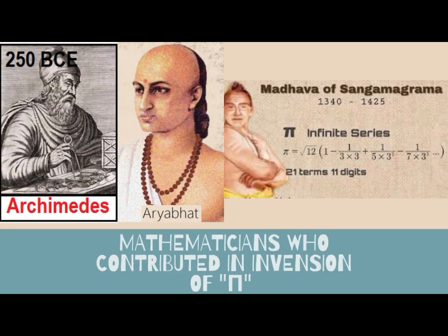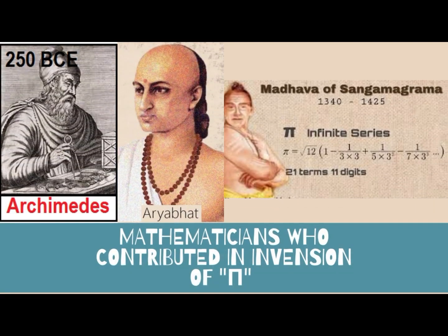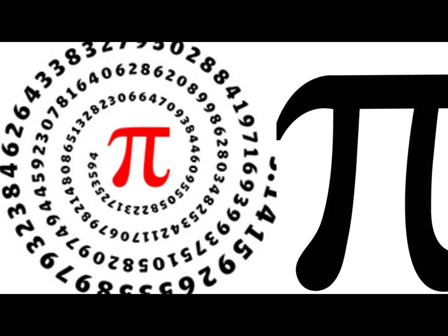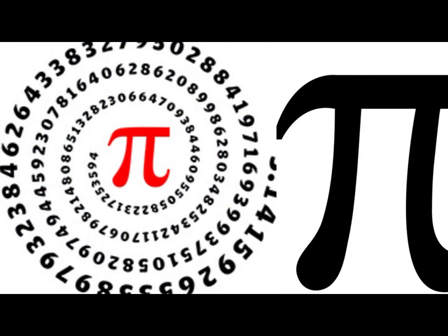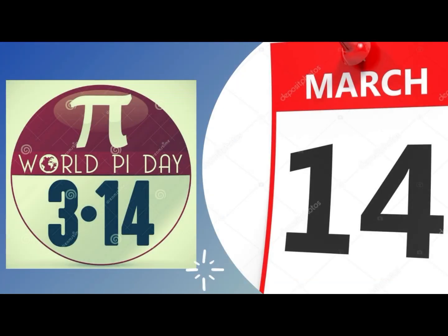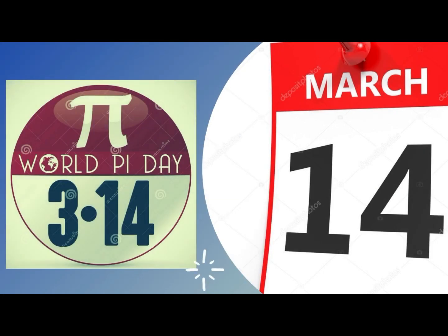In the 14th century, Indian Mathematician Madhava and German Mathematician Leibniz put forward an infinite expression of the value of Pi. March 14th is celebrated worldwide as Pi Day because March 14th is written as 3.14, which is the first two-digit approximation of the value of Pi.